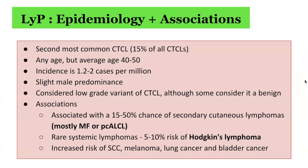Lymphomatoid papulosis accounts for approximately 15% of all cutaneous T-cell lymphomas. These can present at any age — the youngest reported patient was aged five months and the oldest was 84 years. In a large case series, the average age of onset varied between 35 to 45 years, with an average age of 40 to 50 years. There is a slight male predominance with a male-to-female ratio of 1.5 to 1, and the incidence is 1.2 to 2 cases per million.